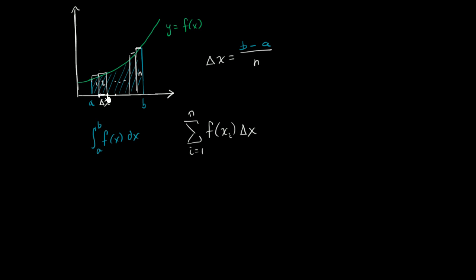So you take x_2, f(x_2) is that height right there. You multiply it times delta x, you get the area. We saw that when we looked at Riemann sums and using that to approximate.